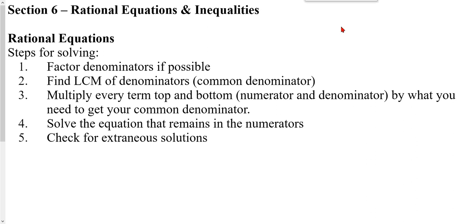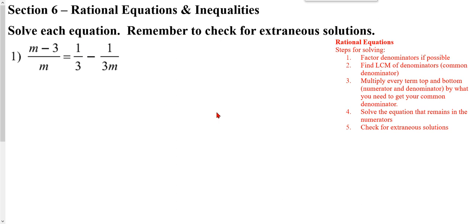We're going to wrap up our chapter dealing with fractions by solving rational equations and rational inequalities — equations and inequalities that have variables in the top and variables in the bottom. When you're solving rational equations, you want to factor the denominators. Find your LCD, the least common multiple of the denominators. Then multiply each fraction top and bottom by that special form of 1 to get a common denominator. Once all the bottoms are the same, you can just solve the top, because if all the bottoms are the same, the tops have to be equal. Make sure you're checking for extraneous solutions — meaning what causes the bottom to be zero.